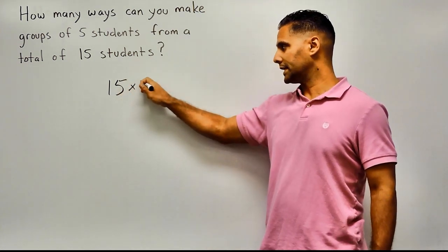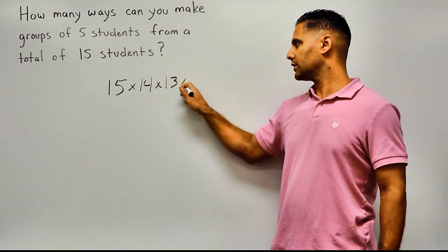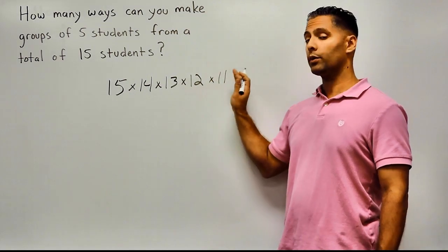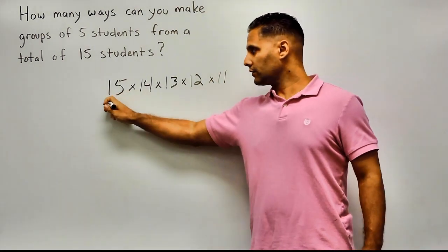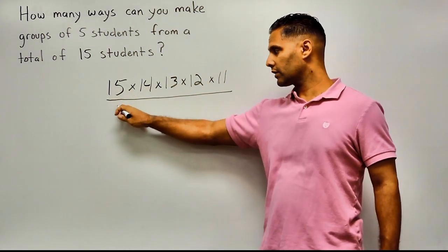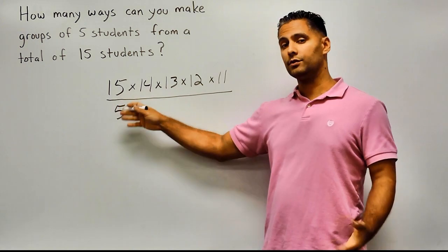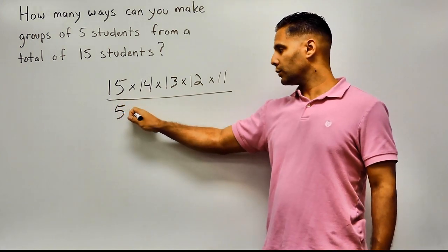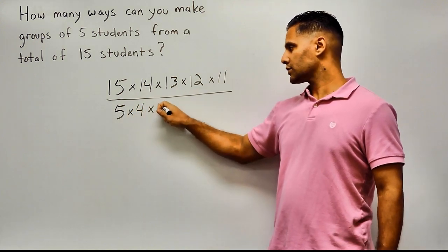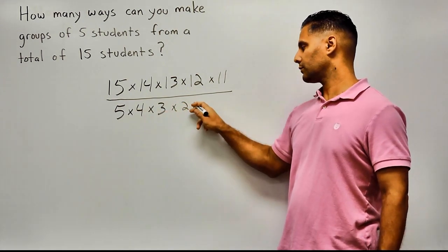So we are going to multiply 15 times 14 times 13 times 12 times 11, and stop right there. For the denominator, write how many objects we are combining at one time — in this case, five students. Write the entire factorial of that number: five factorial is five times four times three times two times one.